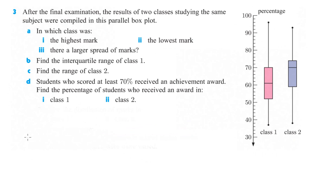Next one, number three. After the final exam, the results of two classes studying the same subject were compiled in this parallel box plot. In which class was the highest mark? That would be class one, right? Because that looks like that's up at, what, 96% or 96 points. The lowest mark was also in class one. And that looks like that mark was, what, looks like that's about 37.